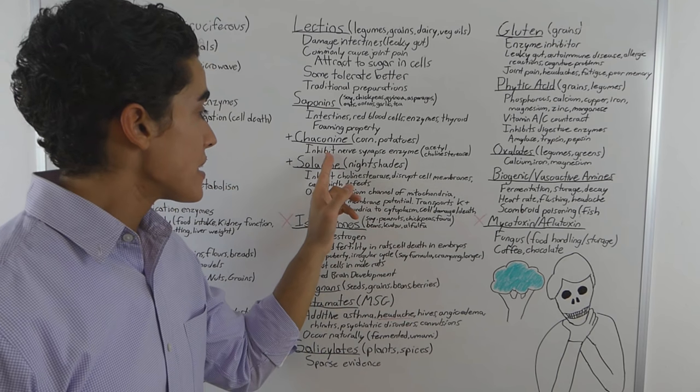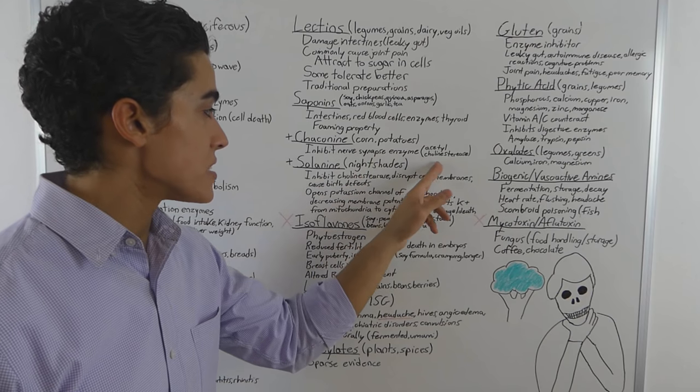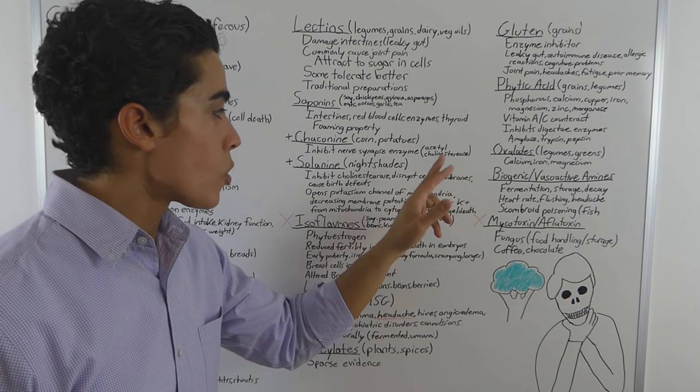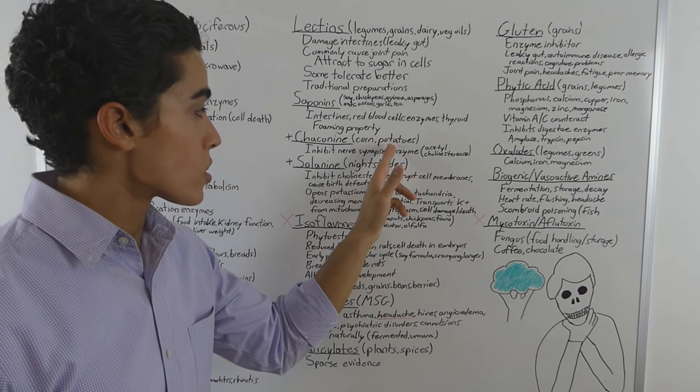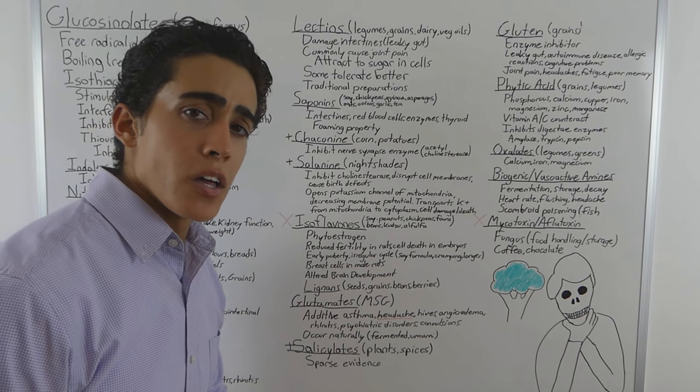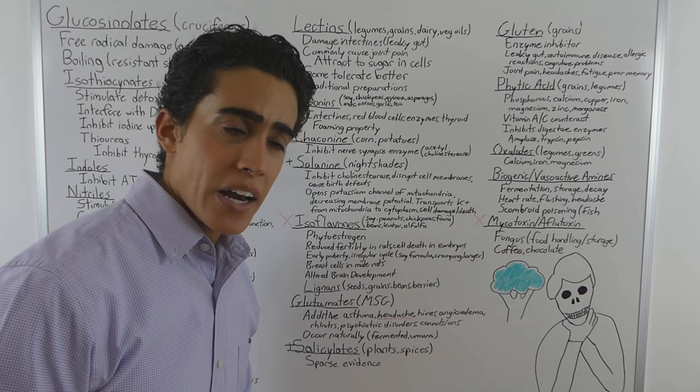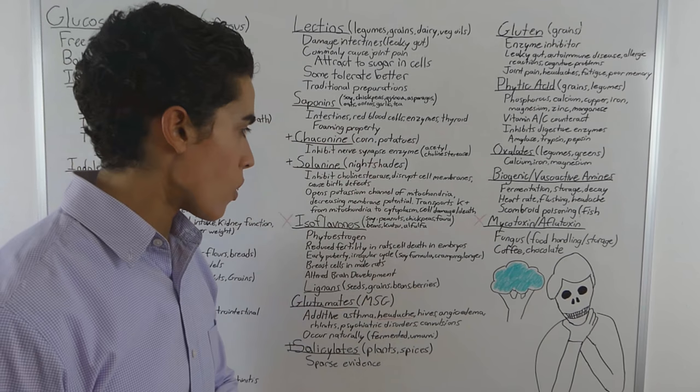I don't know if it was this one. But these inhibit the nerve synapse enzyme acetylcholinesterase. And they're found in large amounts in corn and potatoes. I haven't really seen too many negative things online about this. Because I don't think people consume large enough amounts of these foods raw.